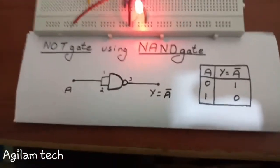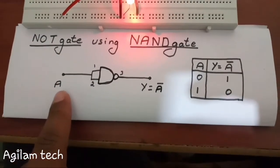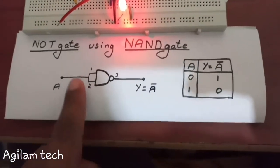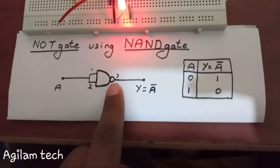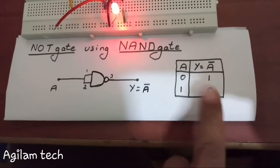Hey everyone, today we are going to see NOT gate using NAND gate. This is the circuit diagram given below. Pins 1 and 2 are shorted and pin 3 is taken as output. When input is 0, output is 1. When input is 1, output is 0.